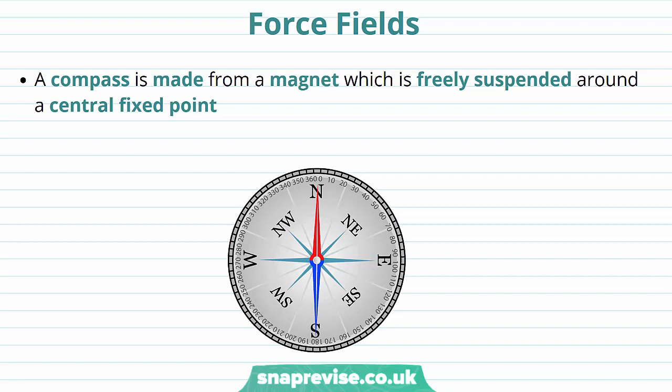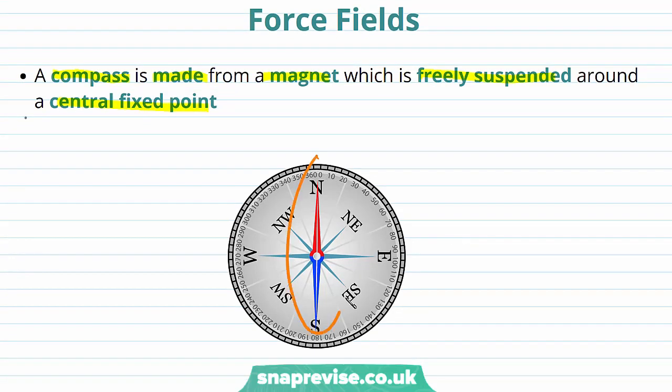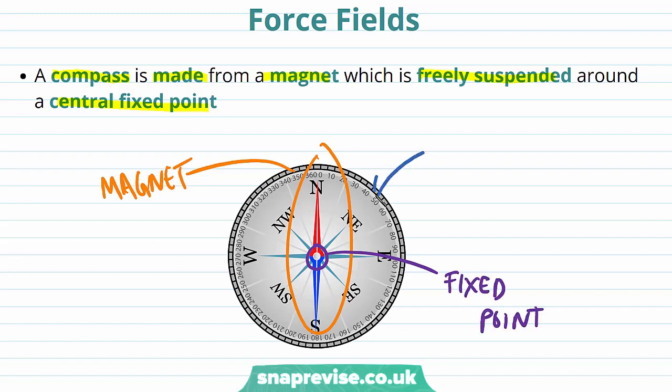We're going to use the example of a compass to understand magnetic force fields. A compass is made from a magnet which is freely suspended around a central fixed point. In this drawing of a compass we can see the magnet in the centre here. And this is the central fixed point it's suspended on. The rest of the compass provides a background reference, and compasses are extremely useful for navigation purposes.